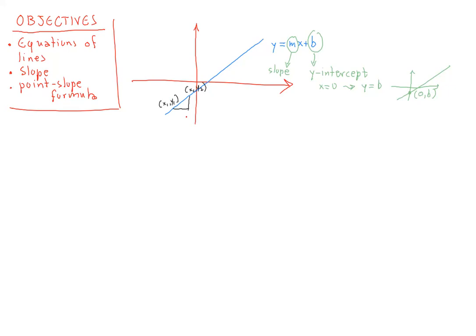This is the rise between these two points, and this is the run between these two points. The rise over run for these two points is equal to (y2 - y1) over (x2 - x1).